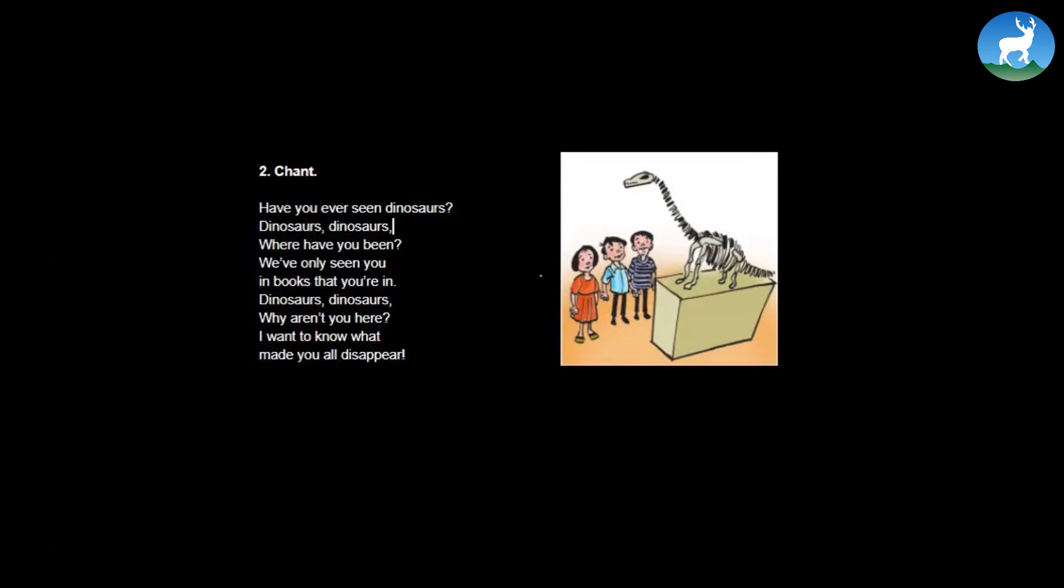Now I want you to observe this picture once again. So let's read this short chant or a short poem, I would call it. And here's the dinosaur skeleton, should I call it? And here's something written about it. Have you ever seen dinosaurs? Dinosaurs, dinosaurs, where have you been? We've only seen you in books that you're in. Dinosaurs, dinosaurs, why aren't you here? I want to know what made you all disappear. Well, indeed. It's a very short and sweet poem. And indeed, don't we all want to know what made all these dinosaurs disappear? Though there are a lot of assumptions or theories. But still, in a way, it's a mystery how a creature once thrived on earth disappear. It's a big question. But of course, there are many widely accepted theories of that. Anyway, this was just to chant. And let's move further.